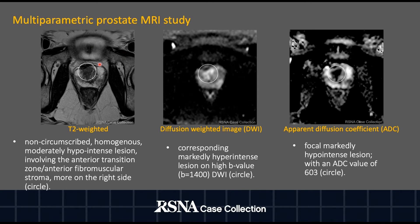We can see here, circled on the T2 weighted image, a non-circumscribed hypo-intense lesion involving the anterior transition zone, and this measured 1.8 centimeters maximally. Looking at the high B value DWI, we see that this lesion is hyper-intense, and on the ADC map there's corresponding marked hypo-intense signal. This high signal on the high B value DWI with corresponding low signal on the ADC map is indicative of restricted diffusion.